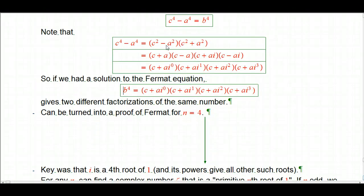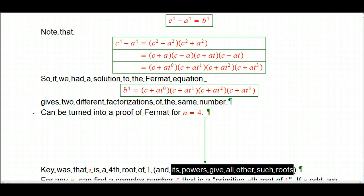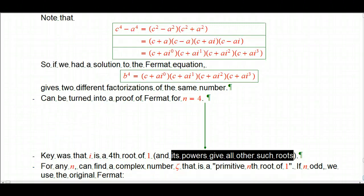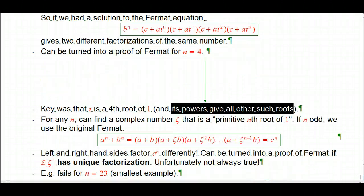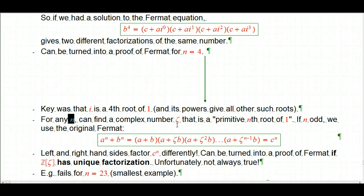Here's the key to what happened with this. It wasn't so much difference of squares, it was the fact that i is a 4th root of 1. And it's a special kind of 4th root of 1. I mean, if I asked you what's a 4th root of 1, you could just answer, well, 1, because 1 to the 4th is 1. But that's not an interesting 4th root of 1. i is interesting because its powers give all the other roots. There are 4 4th roots of 1, and they're exactly the powers of i. i, minus 1, minus i, and 1. That's called a primitive root of unity. It's a primitive 4th root of unity. Now, it turns out, using complex numbers, for any n, you can find a complex number. It's often called zeta. Bringing in the Greek letters here. That's a primitive nth root of 1.